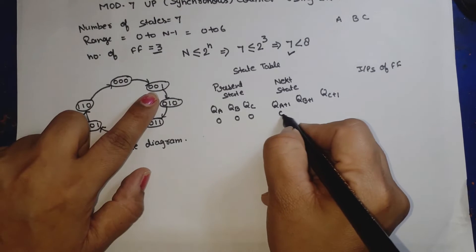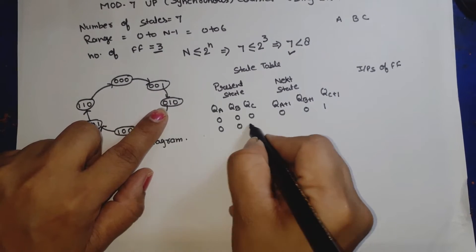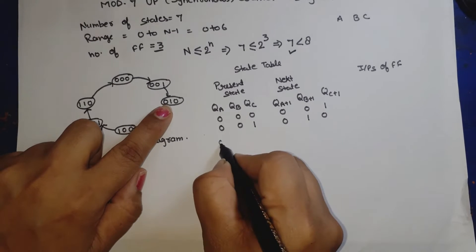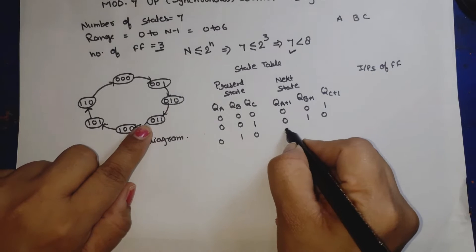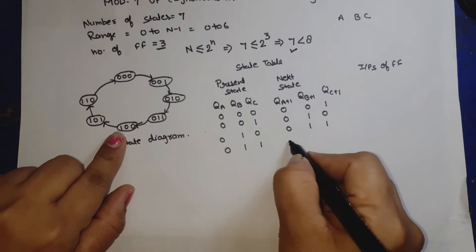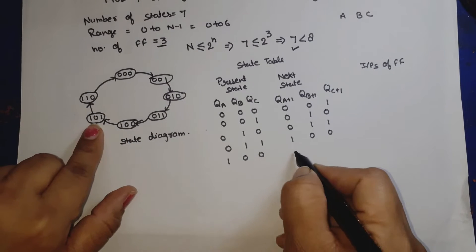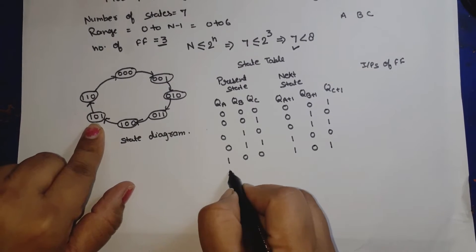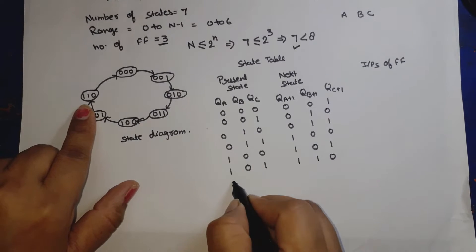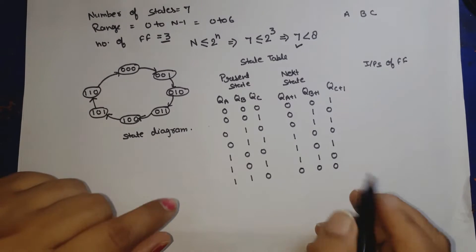Filling in the state table: present state 000 → next state 001; present state 001 → next state 010; present state 010 → next state 011; present state 011 → next state 100; present state 100 → next state 101; present state 101 → next state 110; present state 110 → next state 000.